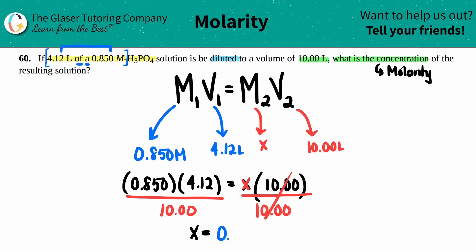So it would be 0.350. And maybe I'll put this in red just to show you that it was this part. So 0.350 unit is, well, we said it was a molarity.